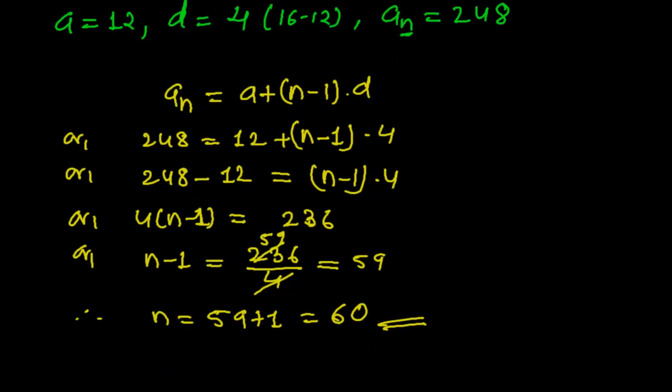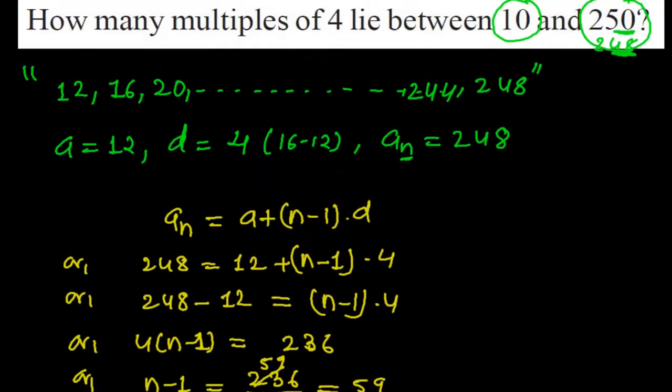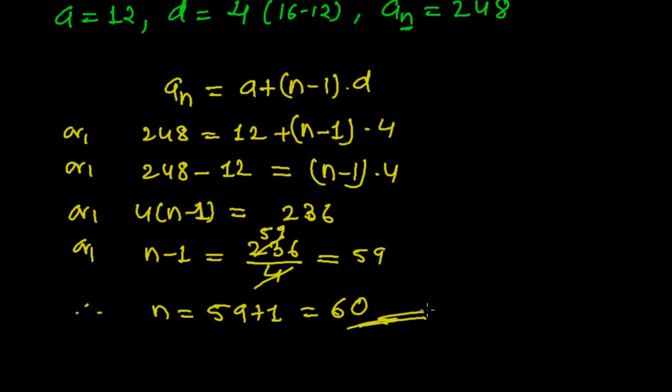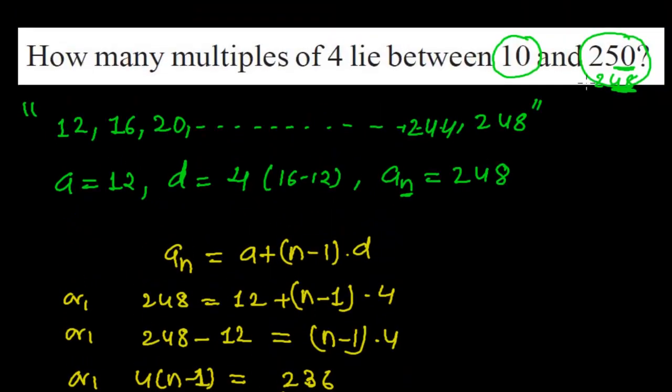So what we know now is that there are 60 number of terms between 10 to 250 which all are the multiples of 4. The multiples of 4 between 10 and 250 are 60. There are 60 such terms, 60 such numbers which are multiples of 4. So like this we need to find out.